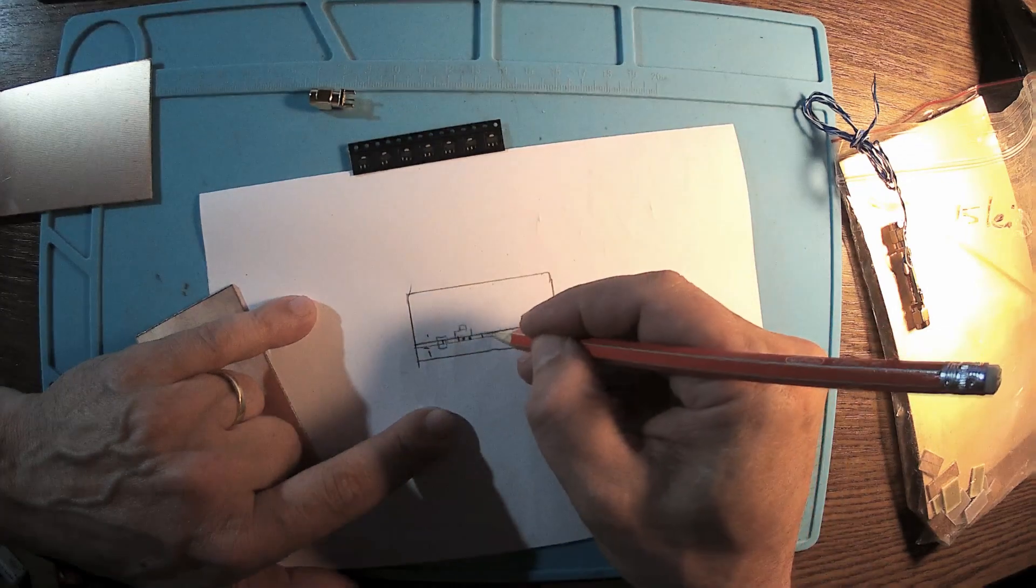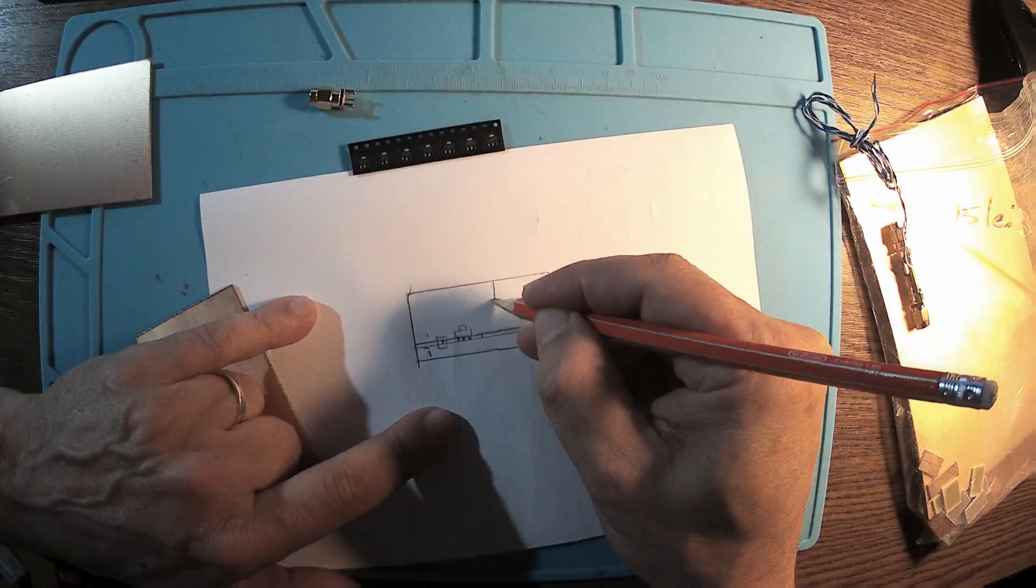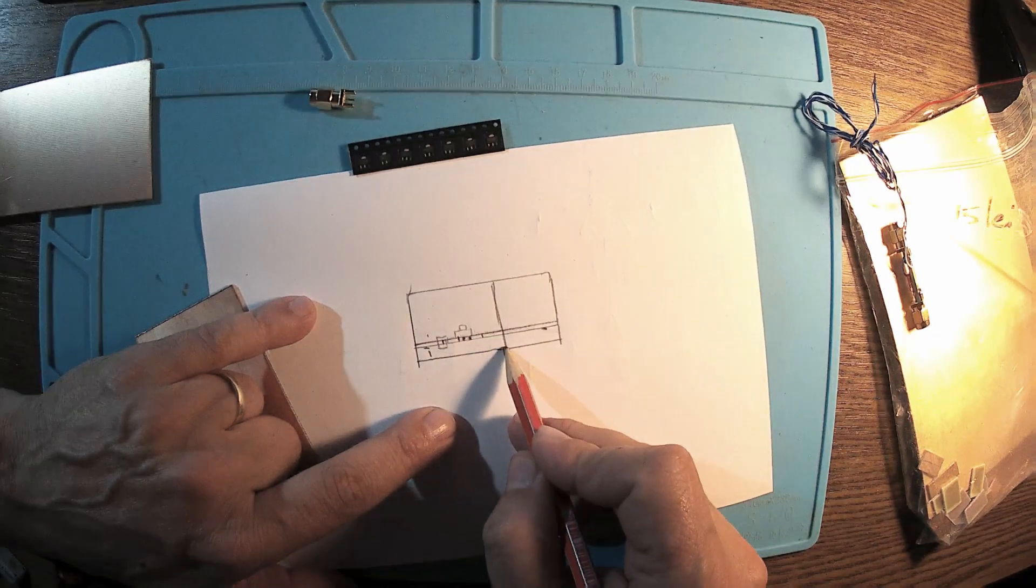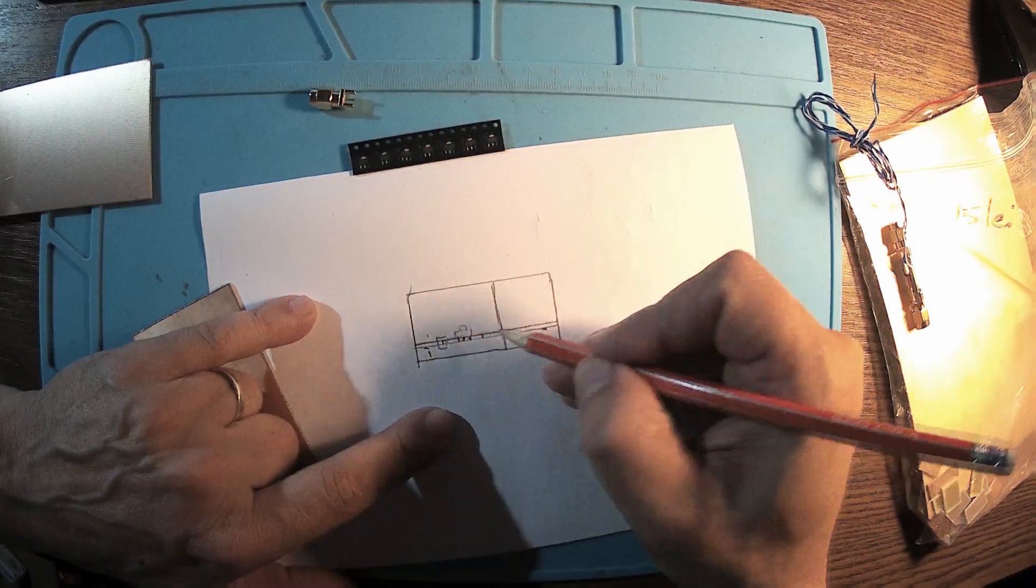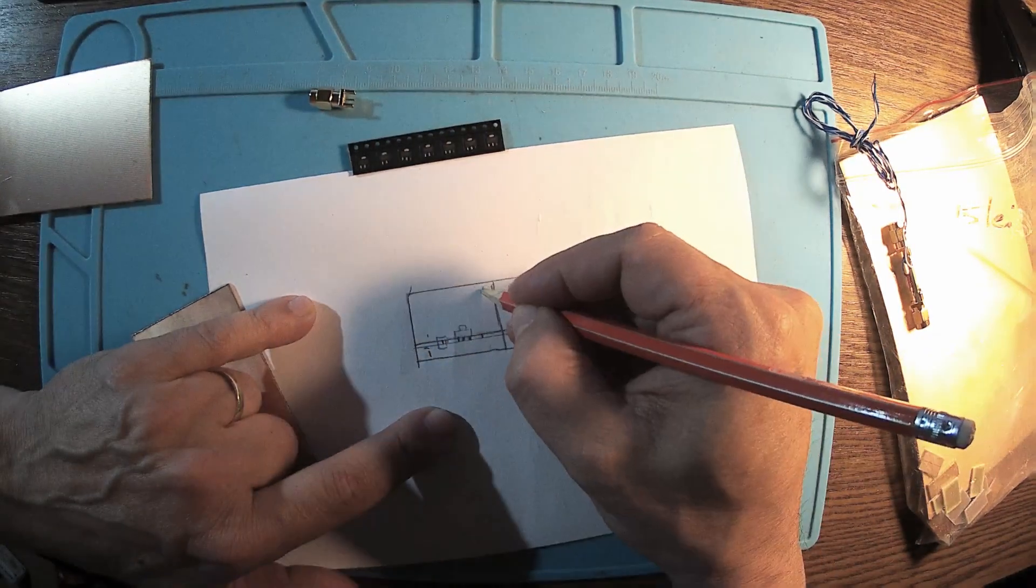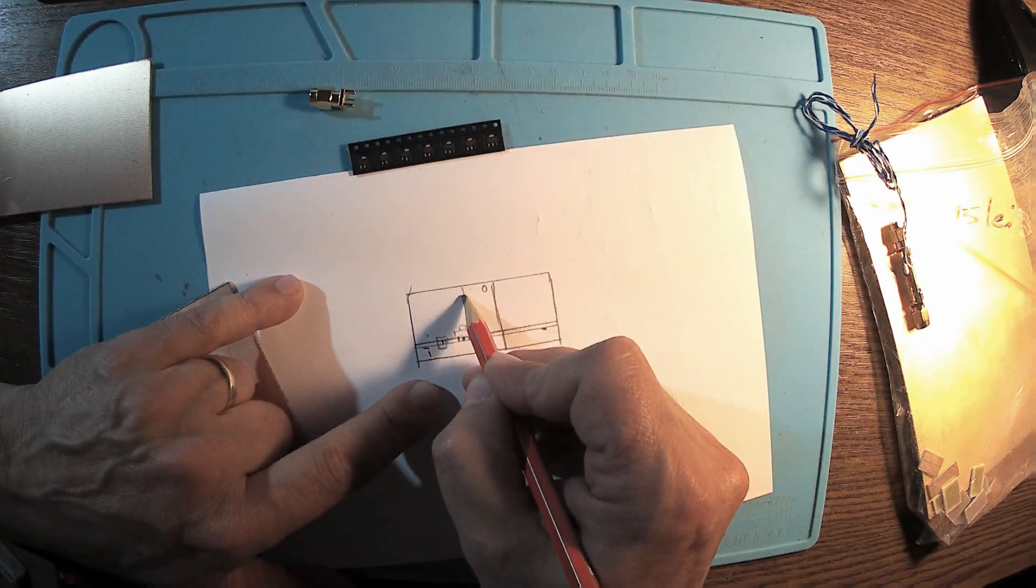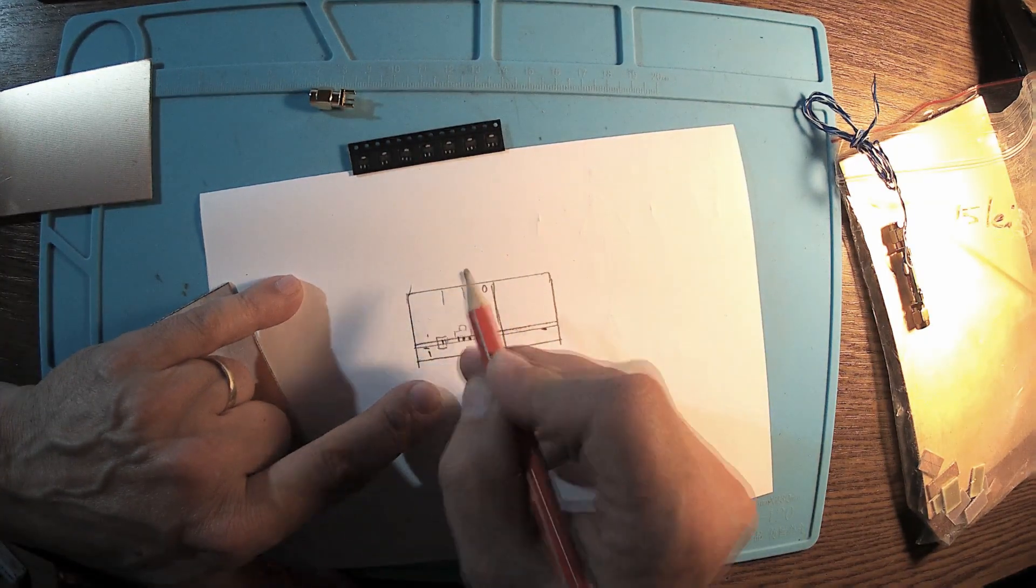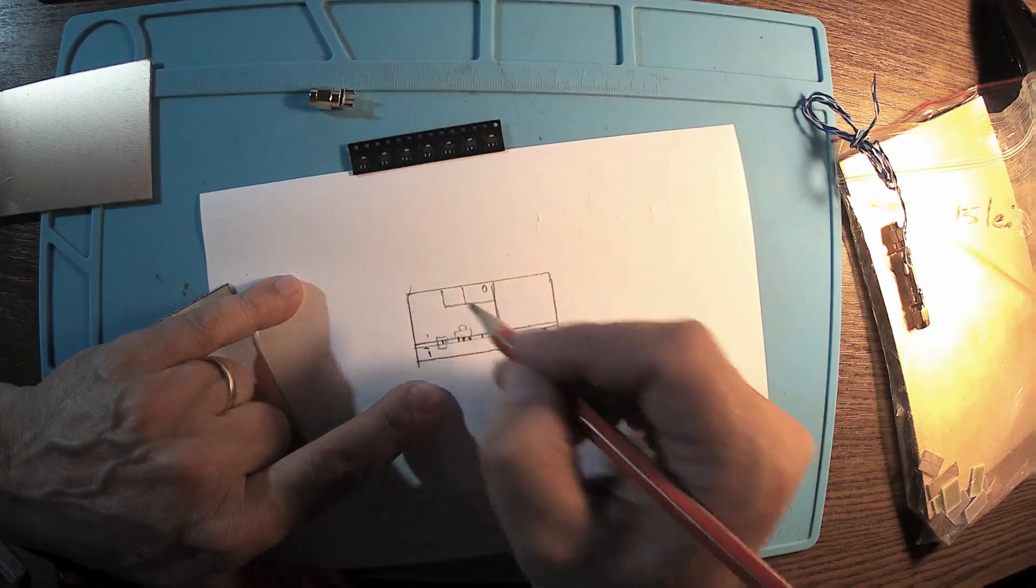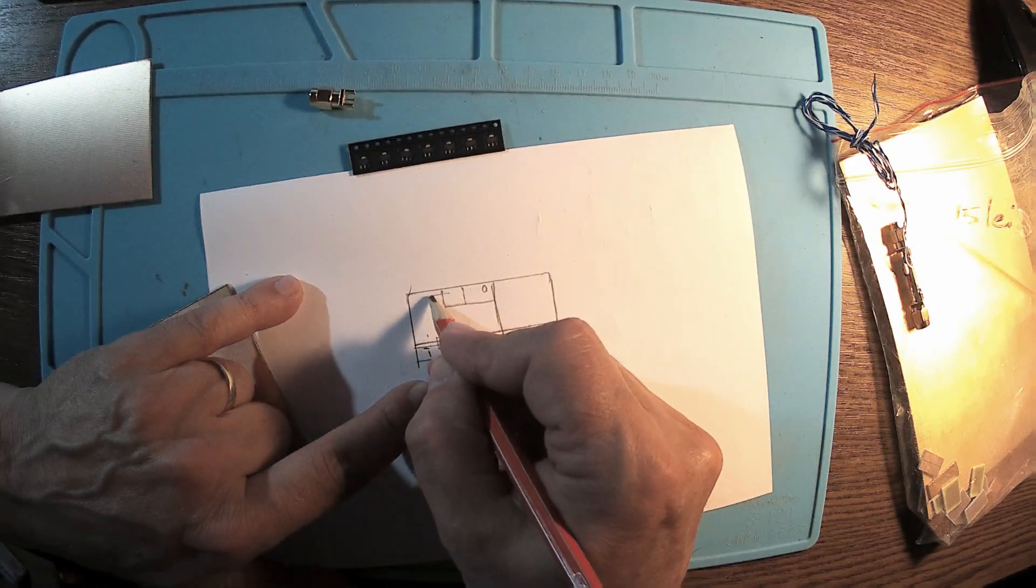So in fact, the board can be something like this. This is ground. Let me have the plus going up here, and we have the first diode, the second diode, plus connection there. Here we can have the capacitors, another capacitor to the ground.